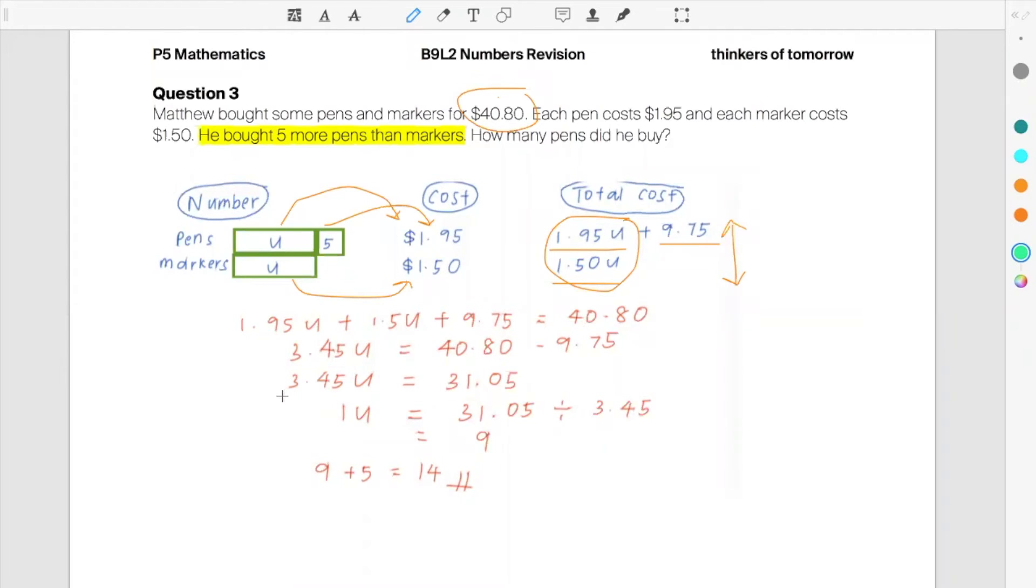Once you find the value of a unit, which is the number of markers, you want the number of pens. So it's 9 plus 5, 14.